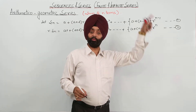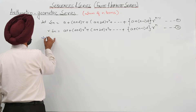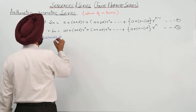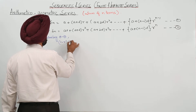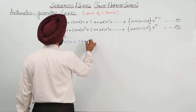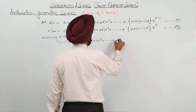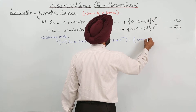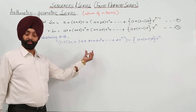Note that r raised to power n minus 1 multiplied by r gives r raised to power n. Now subtracting equation 2 from equation 1, we get (1 minus r) S_n equals a plus dr plus dr squared plus dr to the n minus 1, minus (a plus (n minus 1)d) r raised to power n, plus d r raised to power n.